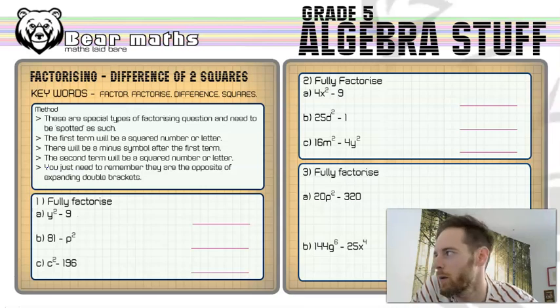So if you've got x times x, you've got x squared. If you've got 3 times 3, you've got 9. 9 is a square number.